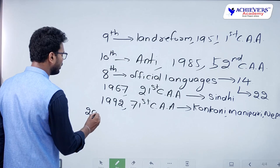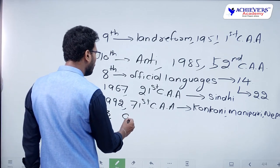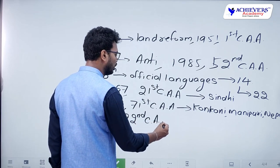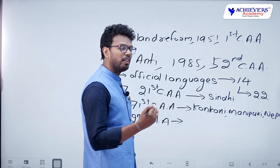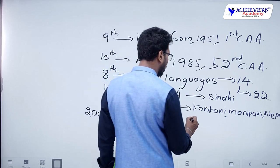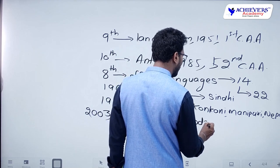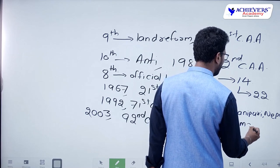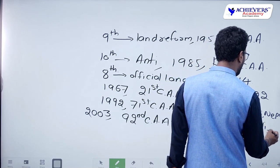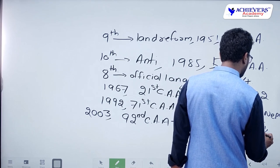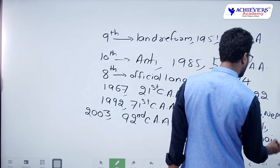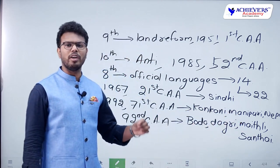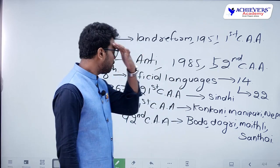In 2003, through the 92nd Constitutional Amendment Act, four more languages were added: Bodo, Dogri, Maithali, and Santhali — becoming the 19th, 20th, 21st, and 22nd official languages.